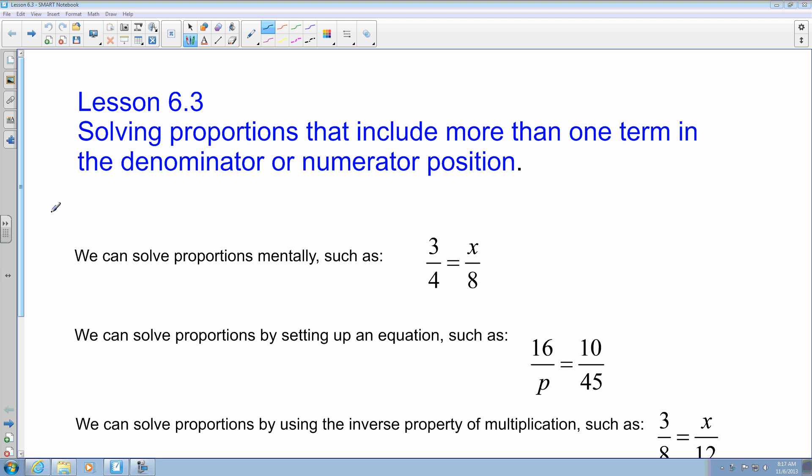In section 6.2, we talked about having a variable, just one term in either the numerator or the denominator. So we could solve these proportions three different ways, and we did that for you yesterday, or in 6.2. So here's just some of the ways that you can solve it.